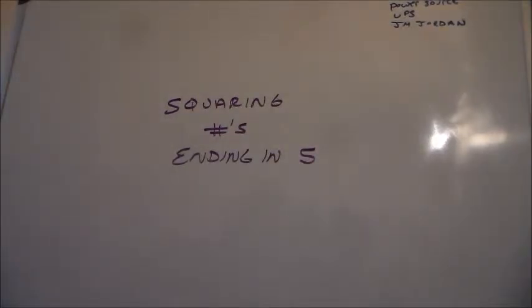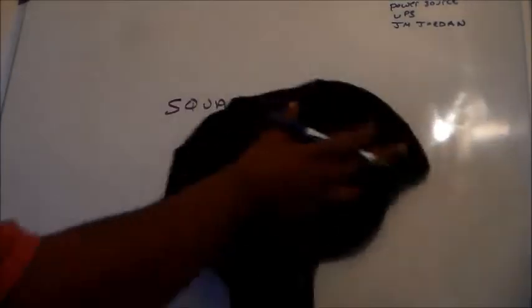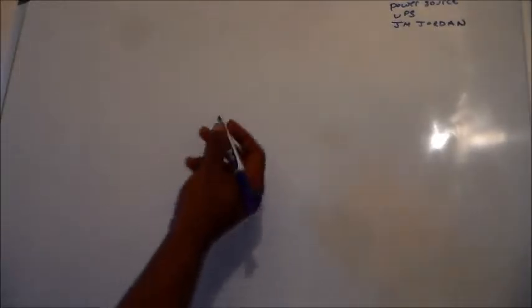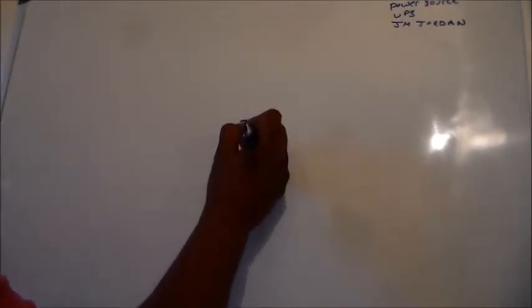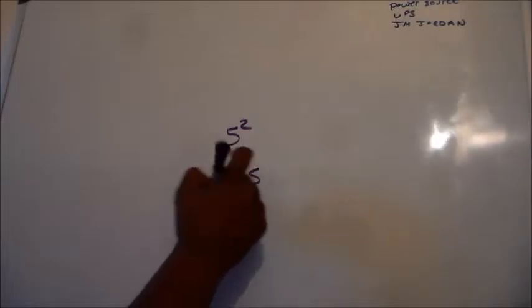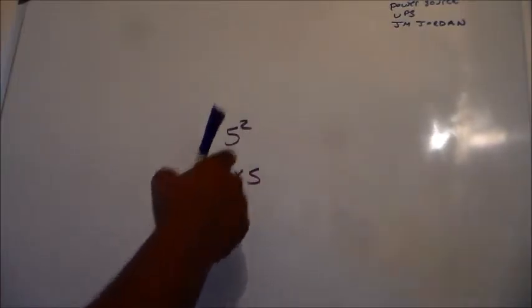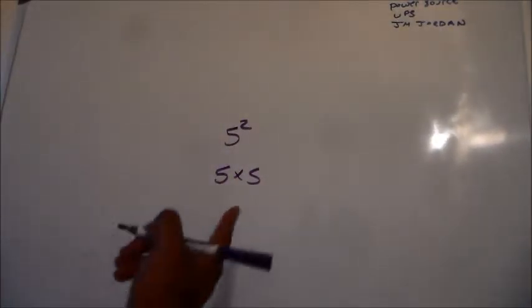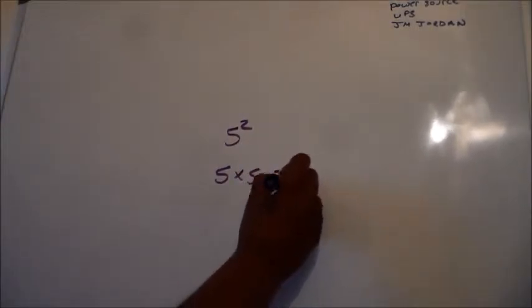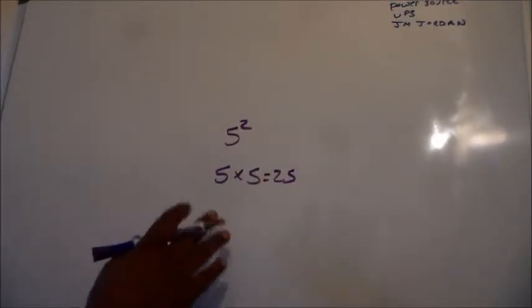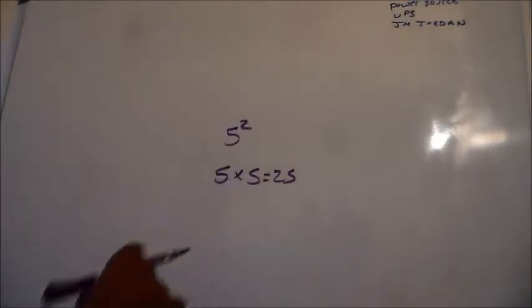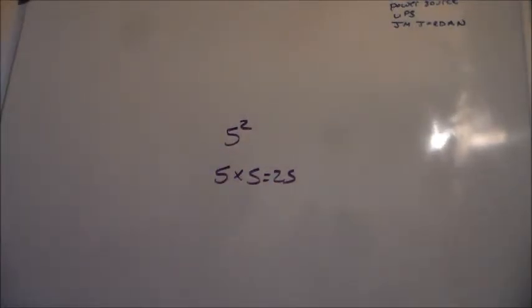Okay, ladies and gentlemen, today our math tip is going to involve squaring numbers that end in 5. Now, we know when we square a number, like 5 times 5, that's basically what this 5 raised to the second power represents: 5 times 5 equals 25.